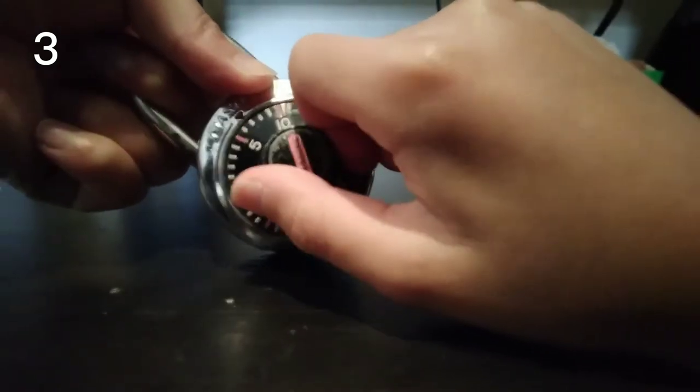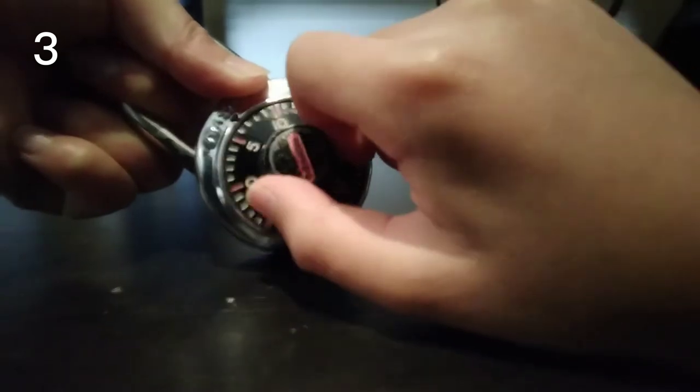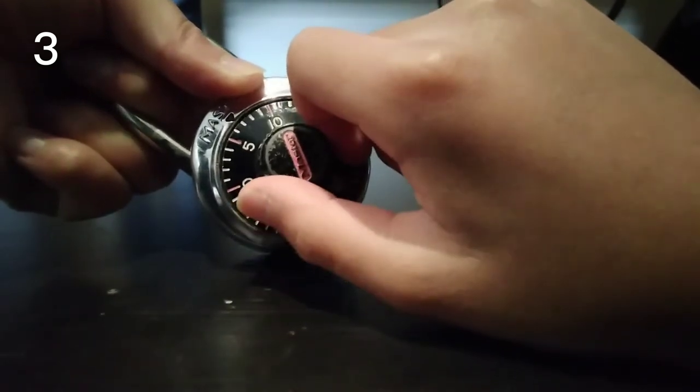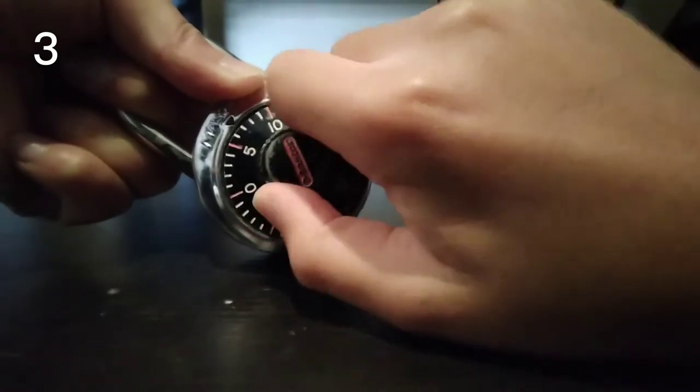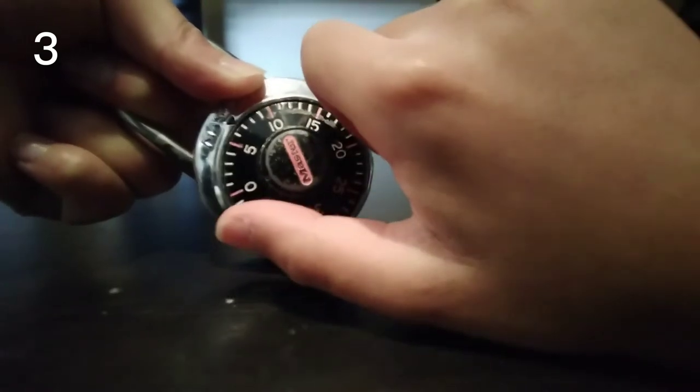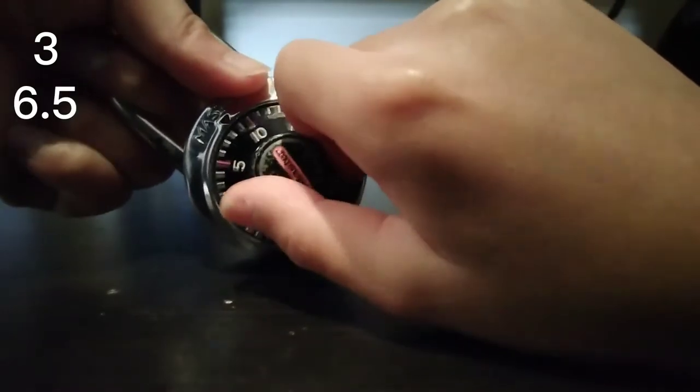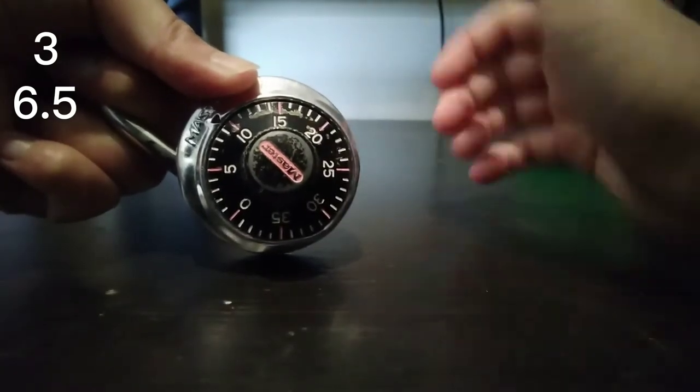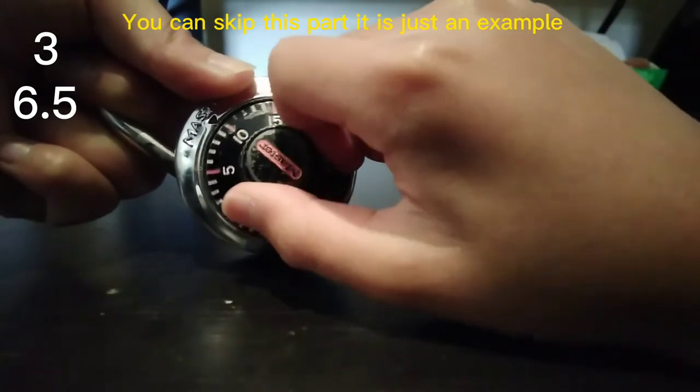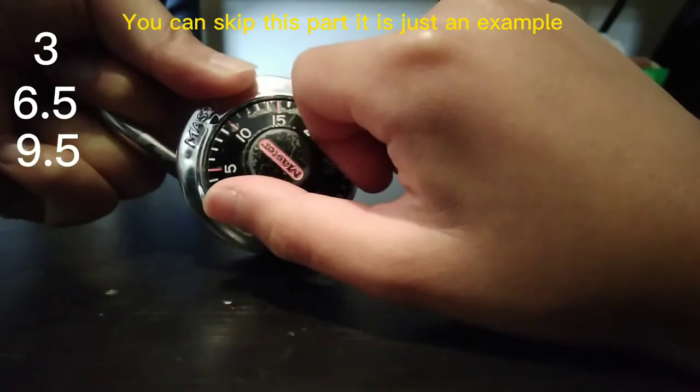Tighten it again and get the next number. 6 and 7 are my two sticking points, and in between that is 6.5, so we're going to write down 6.5. Move it over, tighten it again. It's getting stuck between 9 and 10, so the middle number is 9.5. We're going to write that down.